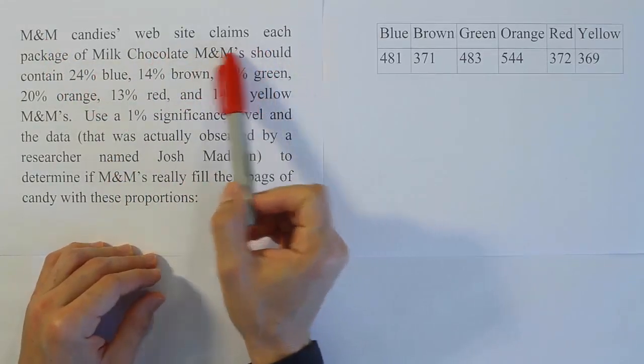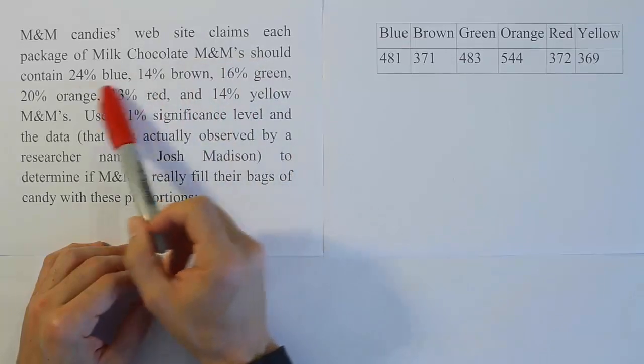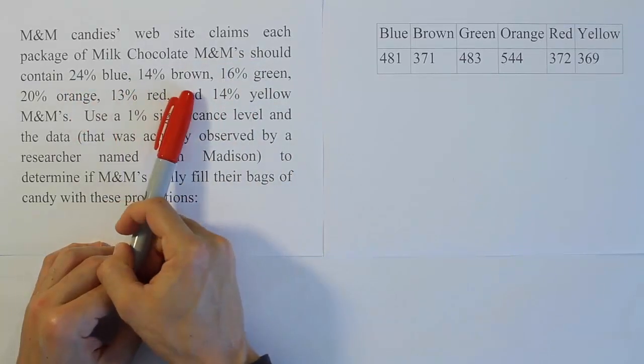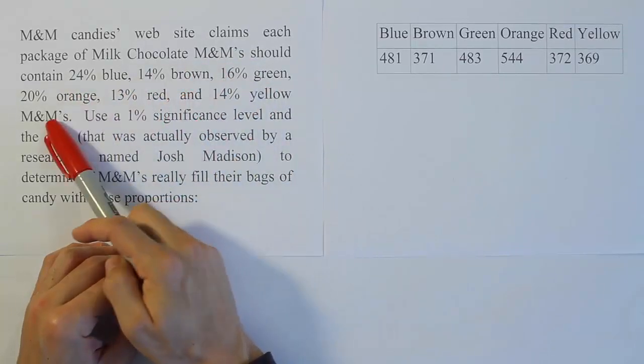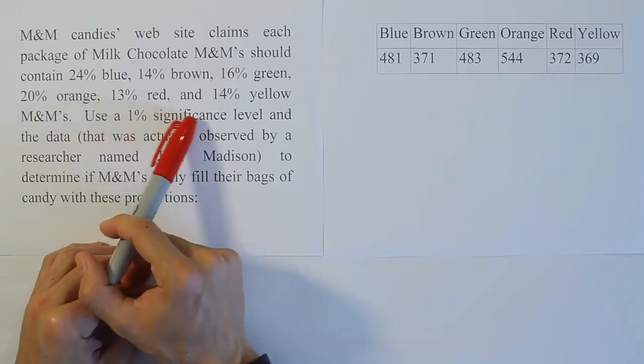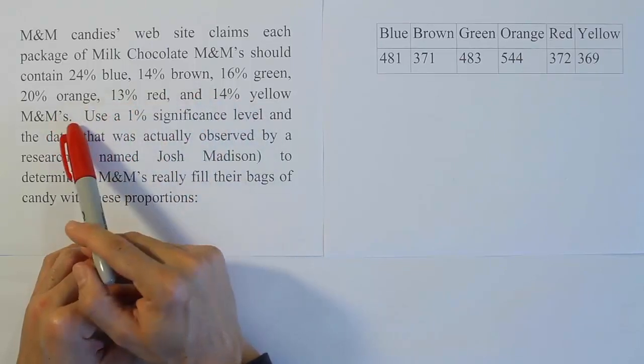M&M Candy's website claims each package of milk chocolate M&M's should contain 24% blue, 14% brown, 16% green, 20% orange, 13% red, and 14% yellow M&M's.